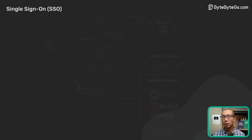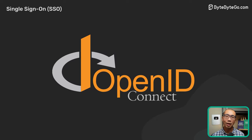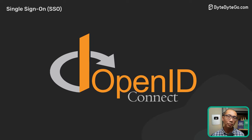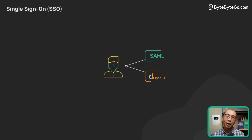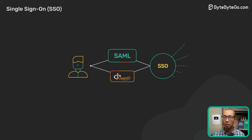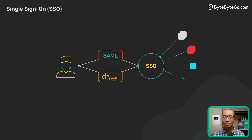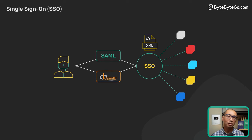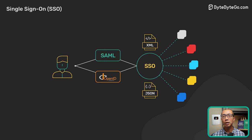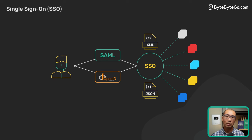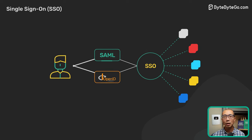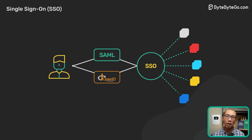Earlier we mentioned that OpenID Connect is another common protocol. The OpenID Connect flow is similar to SAML, but instead of passing signed XML documents around, OpenID Connect passes JWT — a signed JSON document. The implementation details are a little different, but the overall concept is the same.